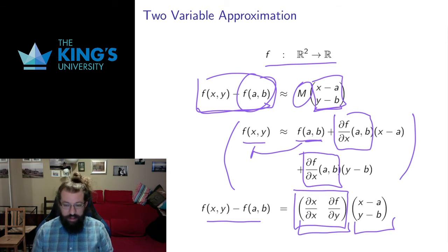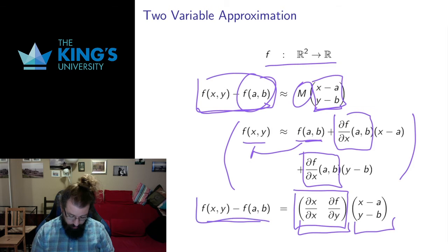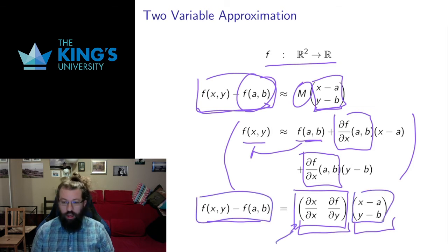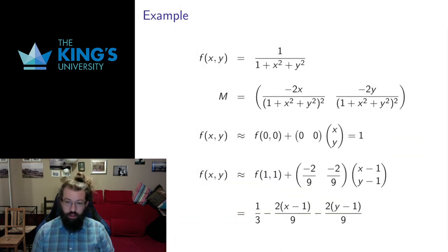It has to be shifted to the origin because that's the only way we really understand linear functions — they have to preserve the origin. Here's shifting the output, here's shifting the input, and here's the action of a one-by-two matrix. Let me quickly go through some examples of what this looks like.